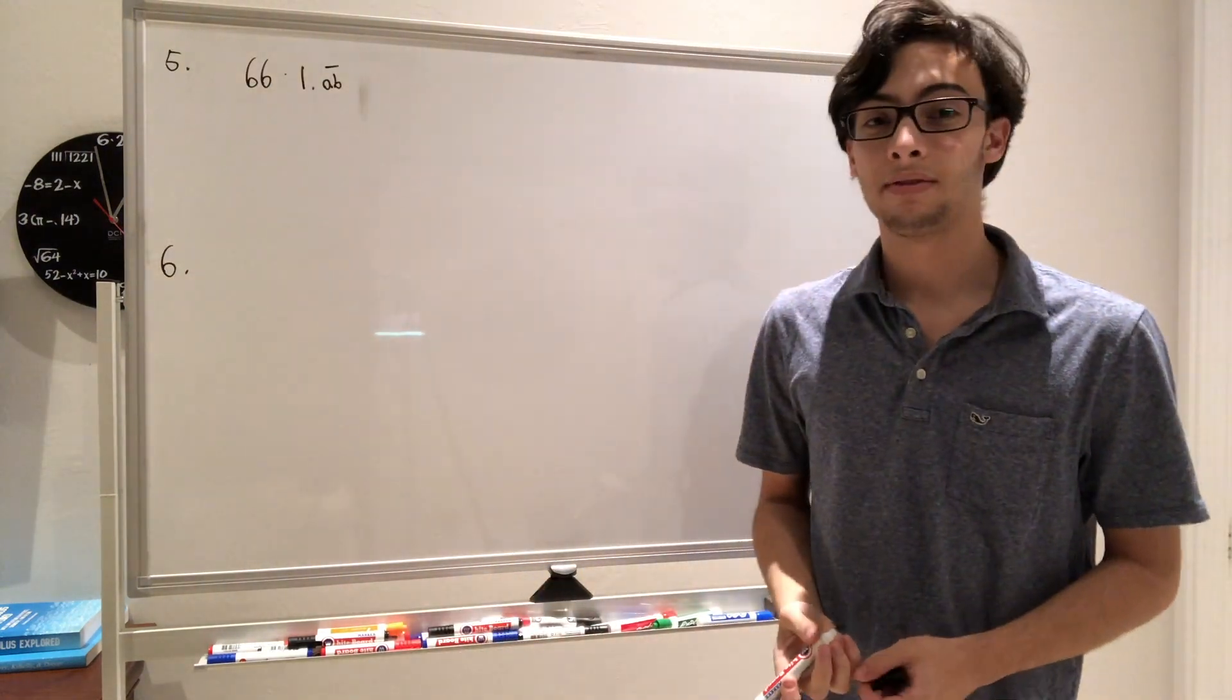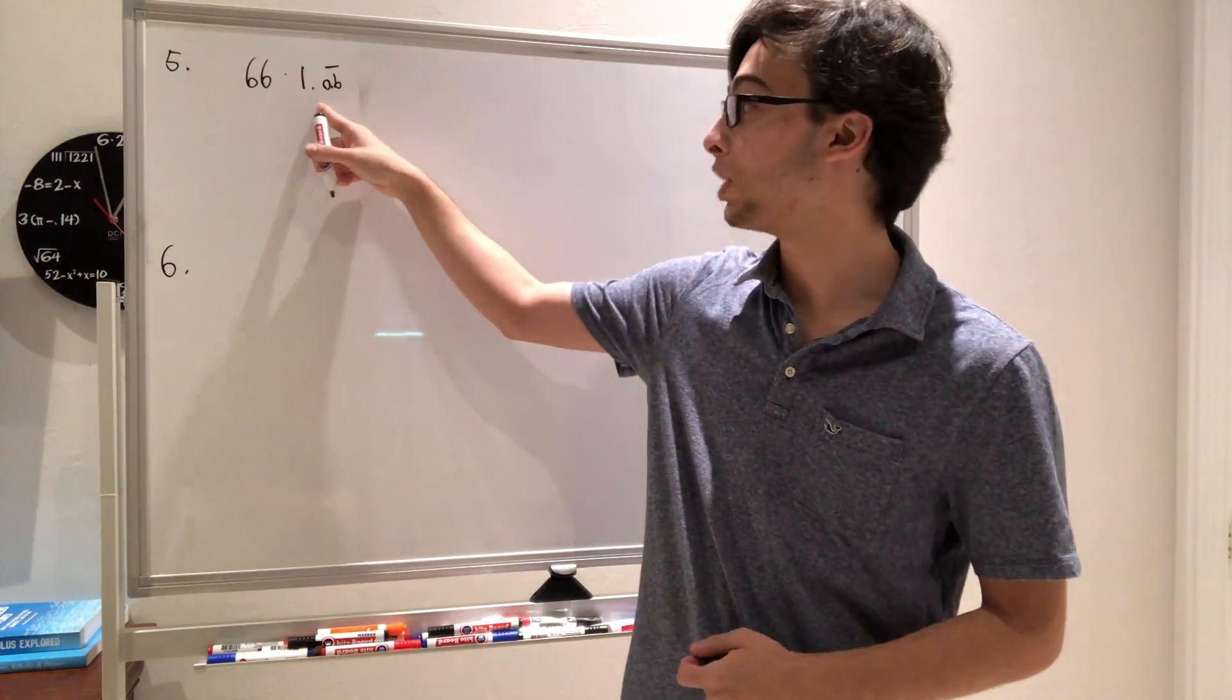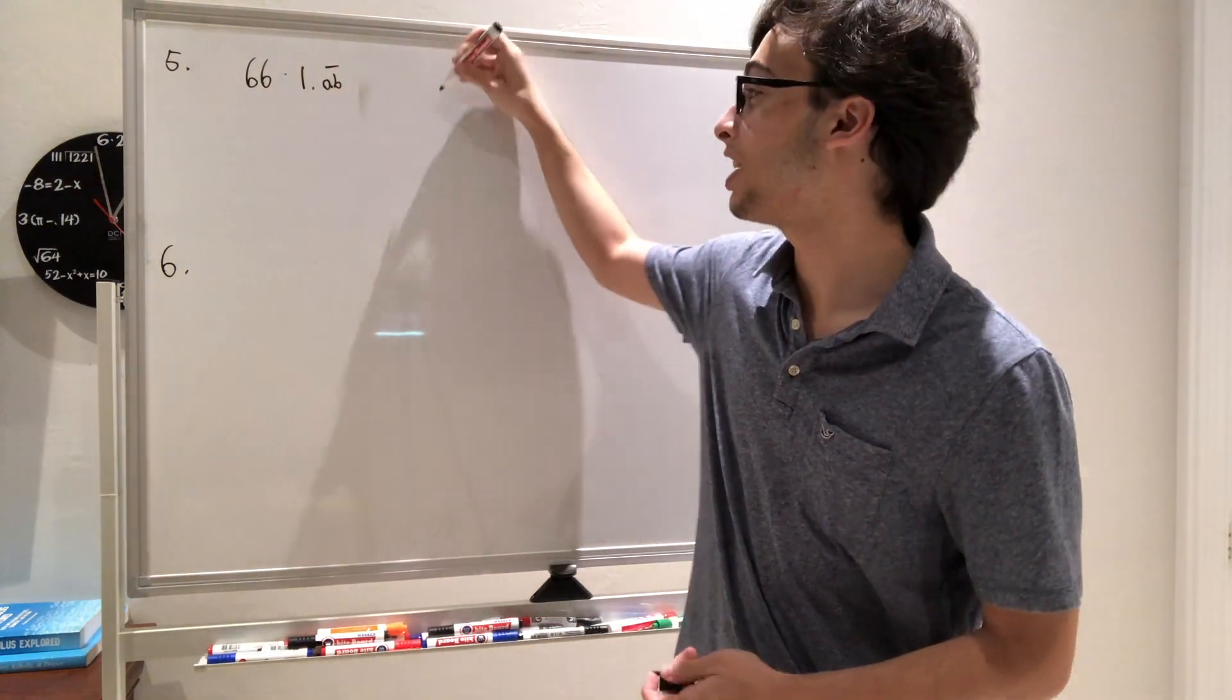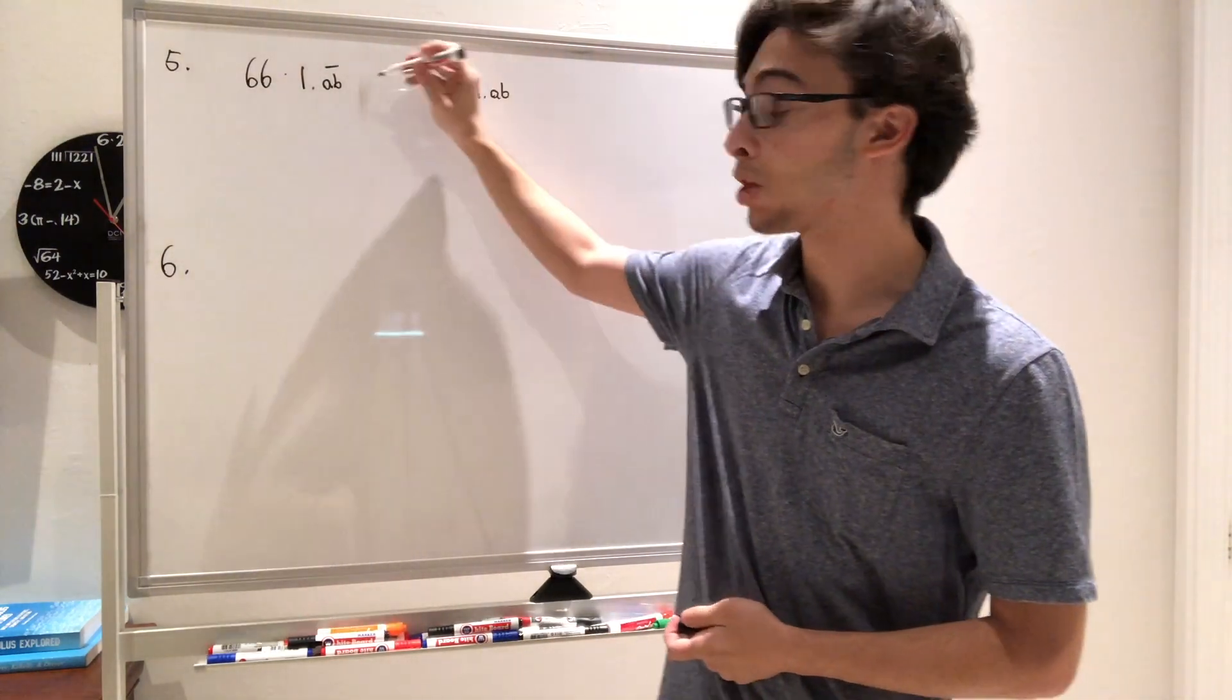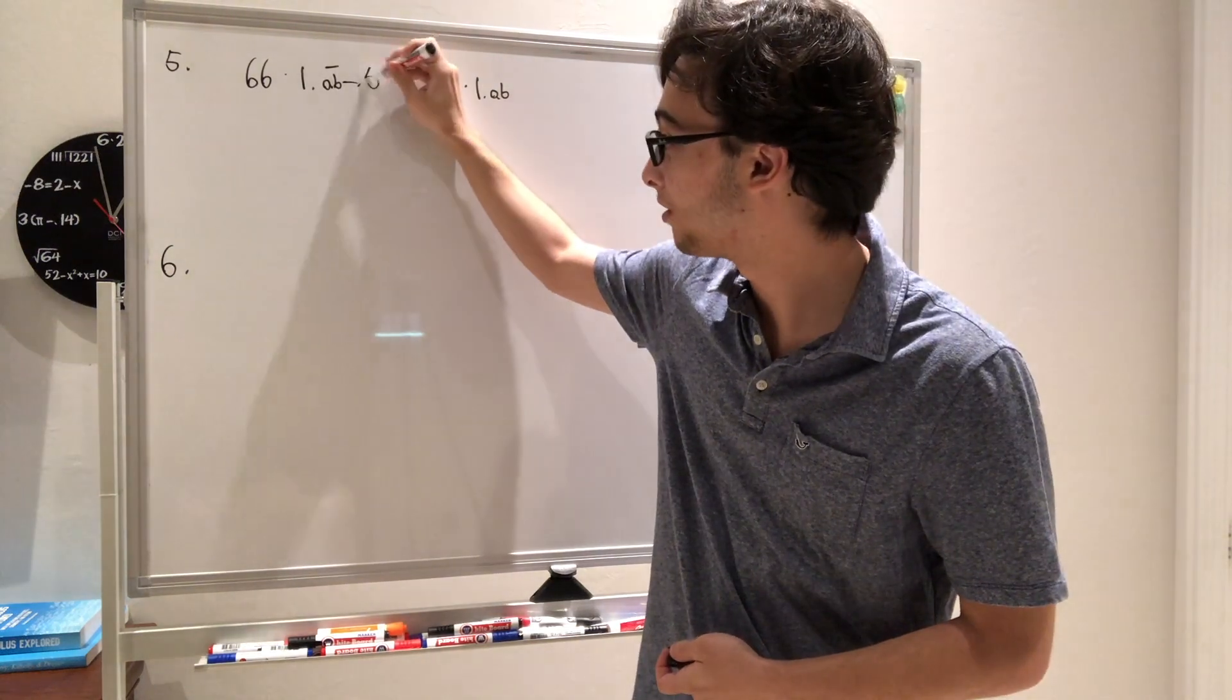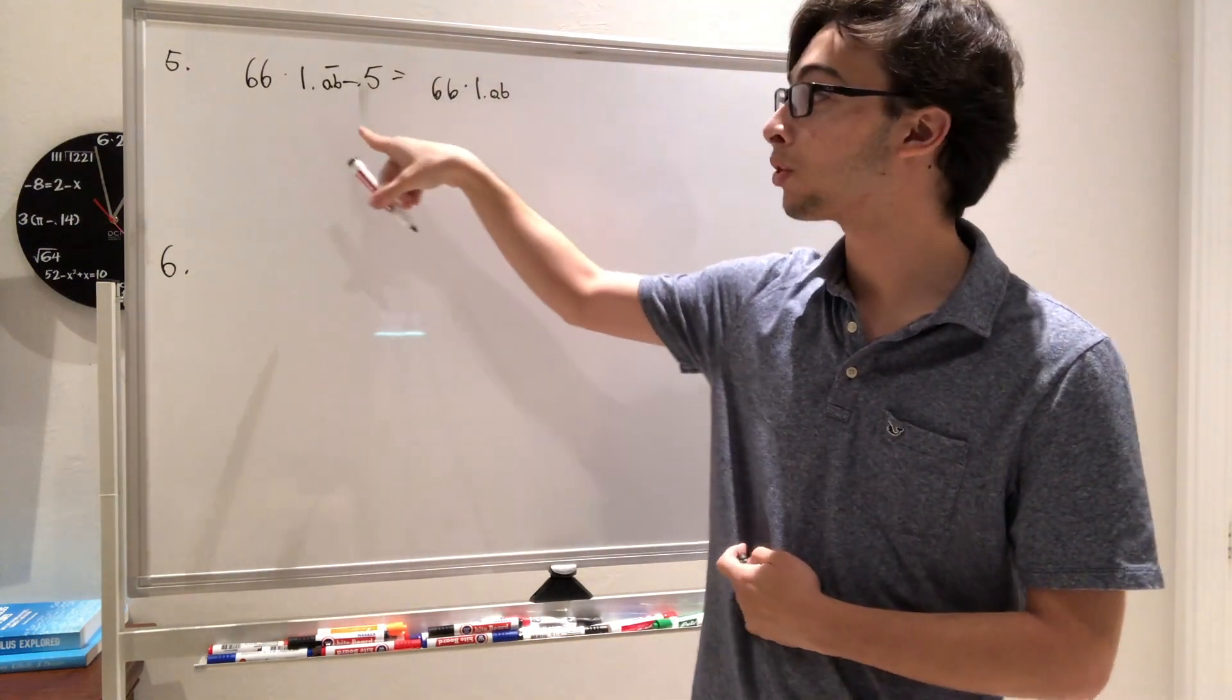Moving on to question 5. It tells us that this person is trying to calculate 66 times 1.AB repeating, but they're making a mistake and accidentally calculate 66 times 1.AB. And when they do this, they get the correct answer, minus 0.5. So we have this equation, and it asks us to find what is AB.